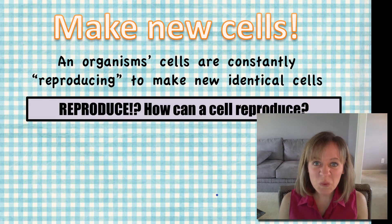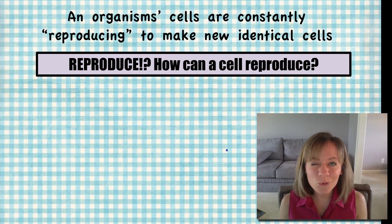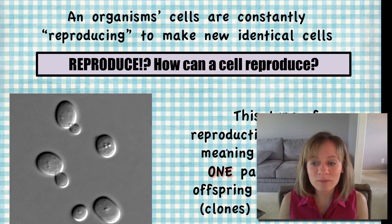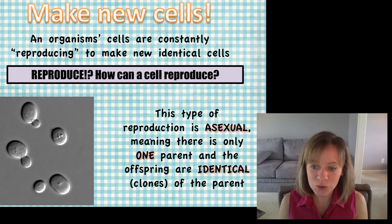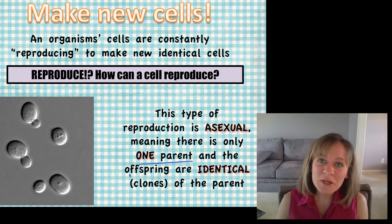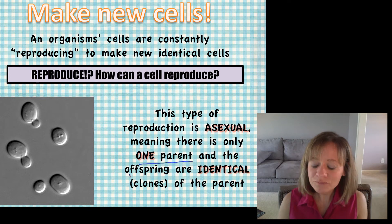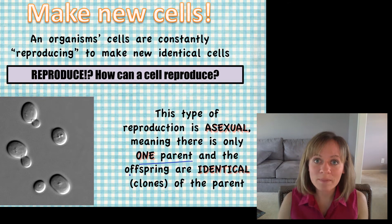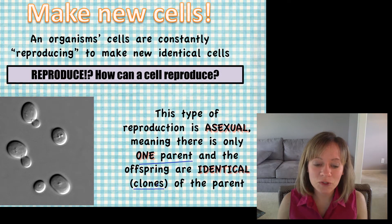You might be thinking: how can a cell reproduce? I thought humans reproduced. How can a little tiny cell do that? Well, this type of reproduction is called asexual reproduction, meaning there's only one parent, and the offspring — offspring simply means children — are identical to that one parent. We call those offspring clones because they are identical to the parent.